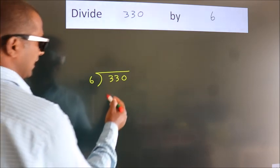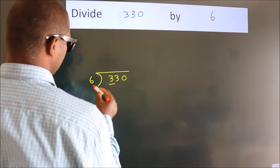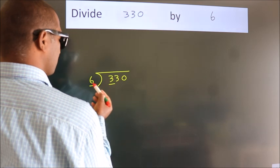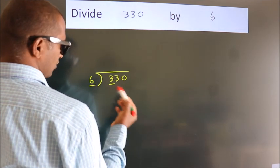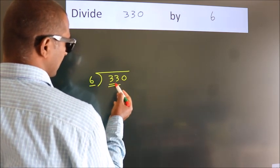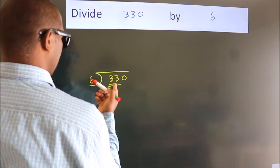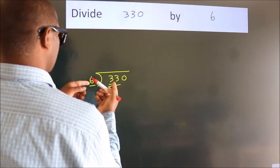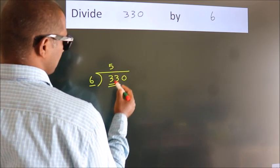Next. Here we have 3. Here 6. 3 smaller than 6. So, we should take 2 numbers. 33. A number close to 33 in 6 table is 6 fives 30.